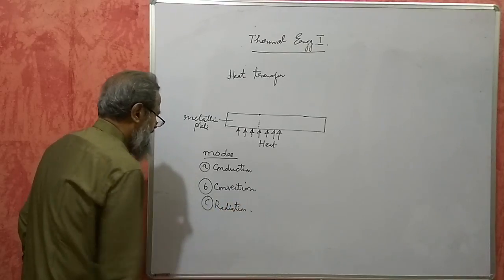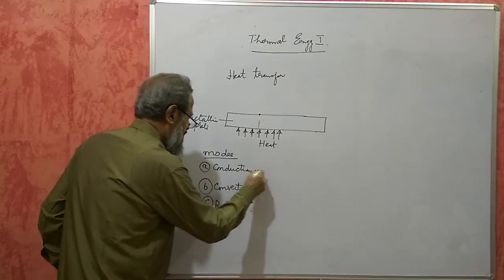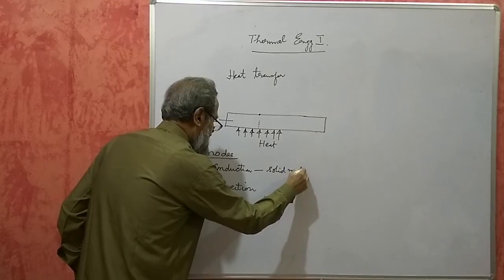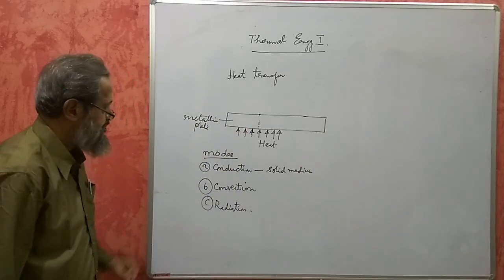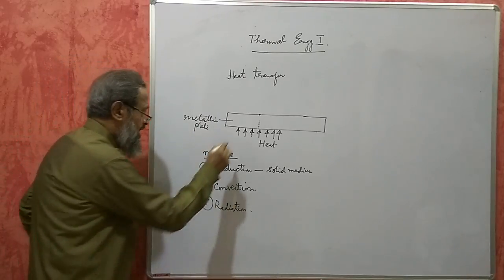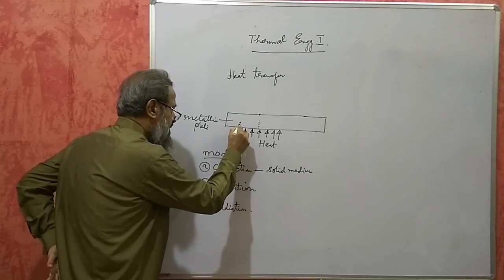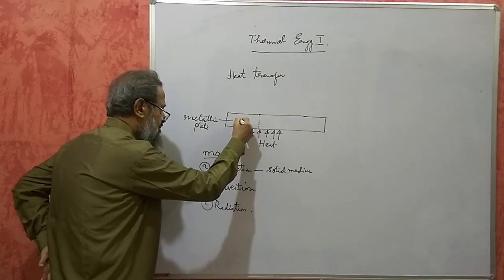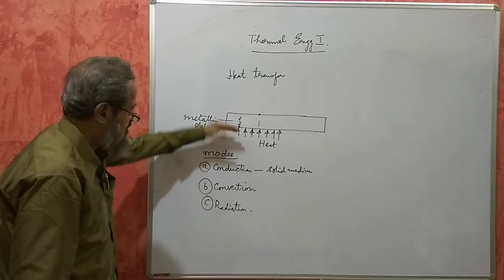Conduction generally takes place through solid mediums. In the metallic plate example, the metallic plate is a solid medium. The particles of the medium are not moving; they are only transferring heat from one particle to the next, moving from bottom to top.